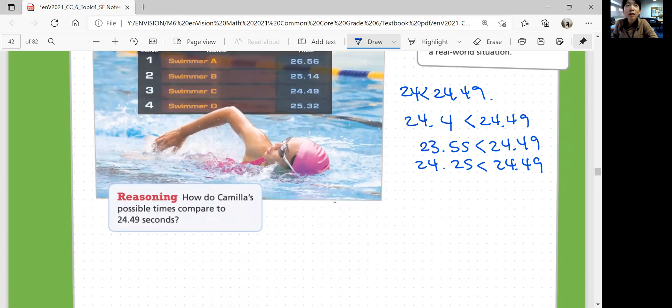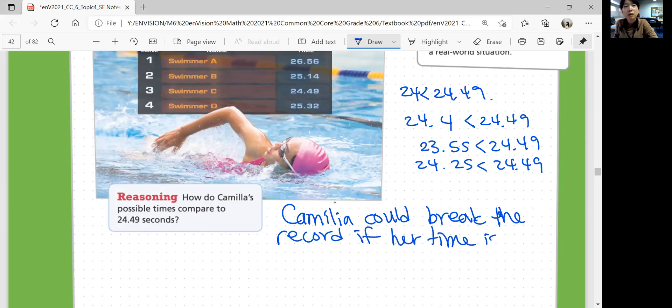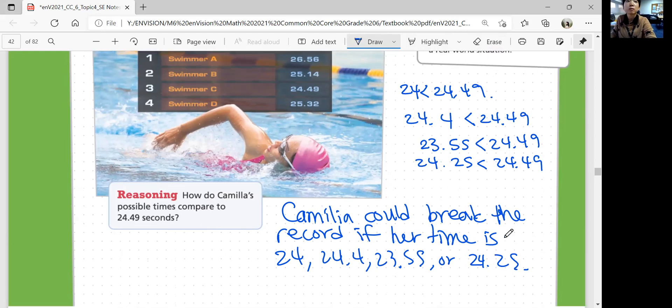Okay? So you can say Camellia could break the record if her time is 24, 24.4, 23.55, or 24.25. Okay? Times that are less than 24.49 seconds would all be a good goal.